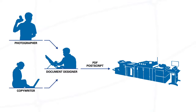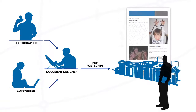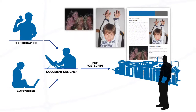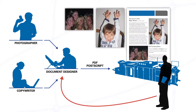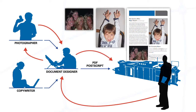But at this point in the workflow, the print operator or customer may notice a few problems with some of the images when printing a sample. When this happens, the operator must go back to the designer, who may need to go back to the photographer to get the images edited, get the PDF updated, and submit the job to the printer again. Or the operator may know how to extract photos from a PDF into an editing tool such as Photoshop to make the image corrections.